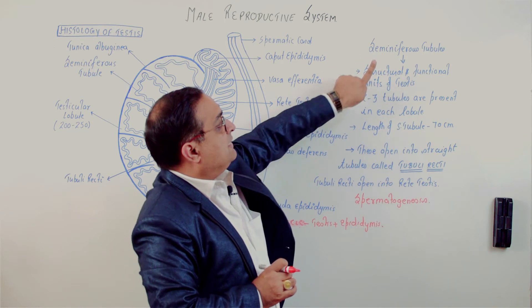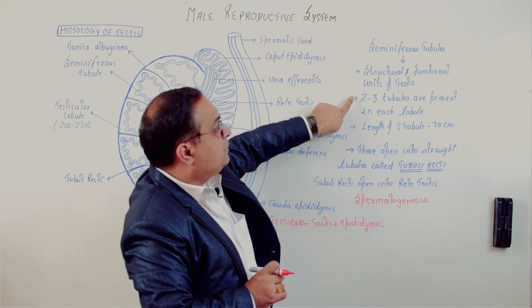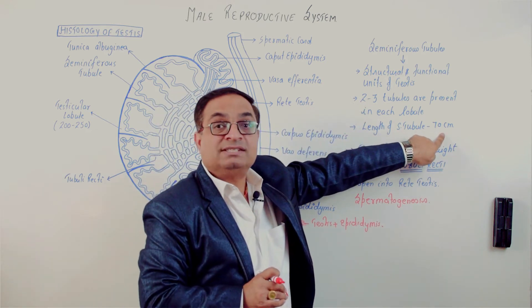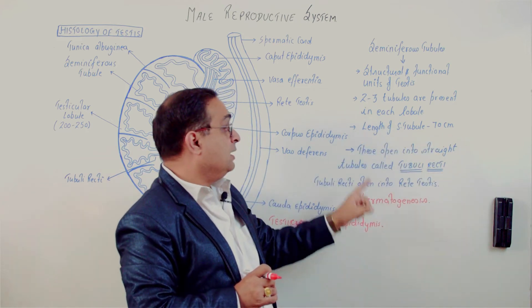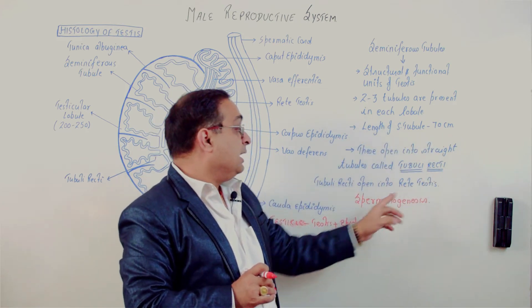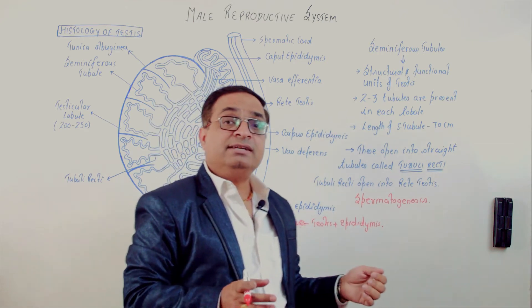Seminiferous tubules, as I've written, these are structural and functional units of testes. Two to three tubules in each lobule. Length of one seminiferous tubule is 70 centimeters. Tubules are opening into tubuli recti and then tubuli recti open into rete testis.